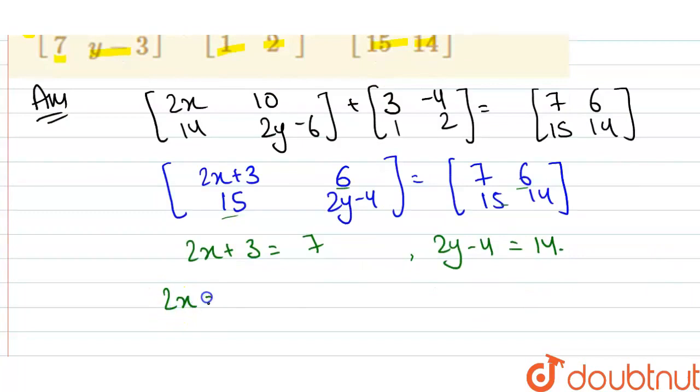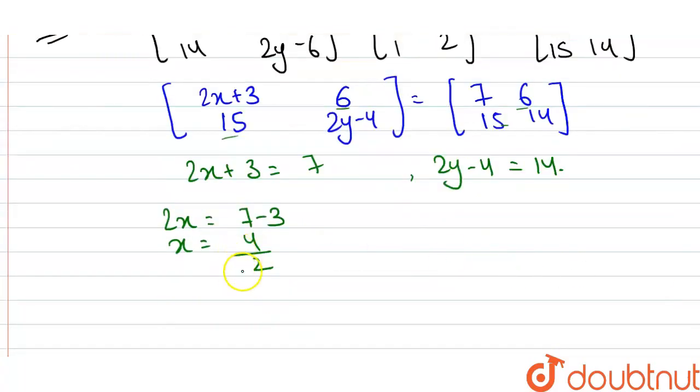From this equation, we can write 2x equals 7 minus 3. The value of x equals 7 minus 3 is 4, divided by 2. This 2 divides this 4 two times, so we get the value of x equals 2.